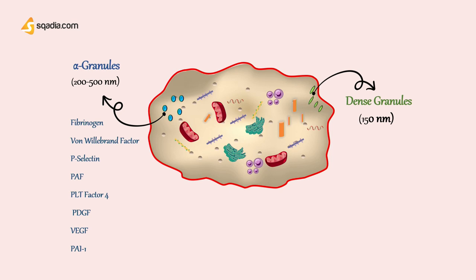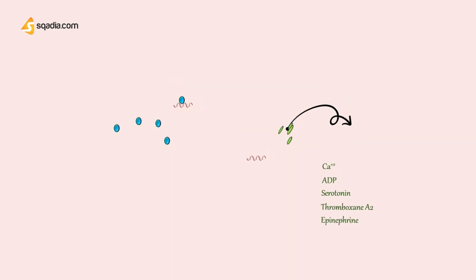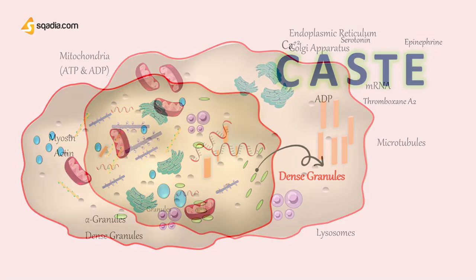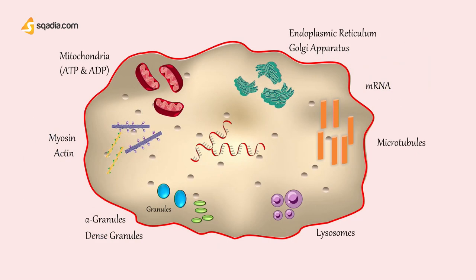In the electron-dense granules or delta granules — the second most abundant platelet granules — they measure about 150 nanometers in diameter. Their contents include calcium, which is responsible for vesicle release and activation of several other mechanisms; ADP, which provides energy and activates calcium release; serotonin and thromboxane A2, which are responsible for vasoconstriction; and also epinephrine. You can remember these via the mnemonic CAST: C for calcium, A for ADP, S for serotonin, T for thromboxane, and E for epinephrine.